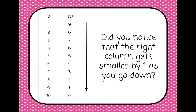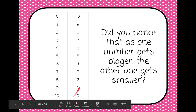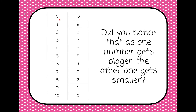Did you also notice that the right column goes down by one? Ten, nine, eight, seven, six, five, four, three, two, one, zero. Did you notice that as one number gets bigger — so this one goes up: one — the other one gets smaller: ten, nine. So this one went up by one and this one went down by one, and that's going to happen every time. Up by one, down by one.